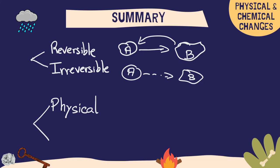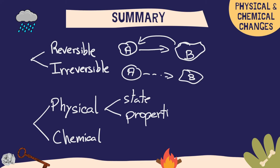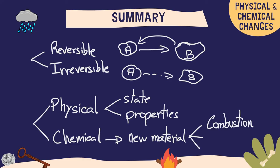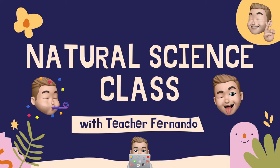We need to differentiate between physical changes and chemical reactions. Physical changes can be changes in state — liquid, gas, and solid — or changes that affect the properties of the material, such as texture, shape, and position. Chemical reactions produce a new material and some waste products; these chemical reactions are combustion, oxidation, and fermentation. That was all for this video, I hope you liked it, see you in the next one, bye!